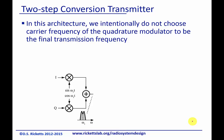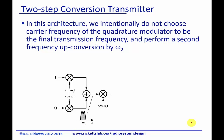So in a two-step converter, we intentionally don't choose the initial LO to be at the final carrier, but rather choose a different frequency, omega-1. And then what we do is we take this signal and upconvert it by a second LO at omega-2.